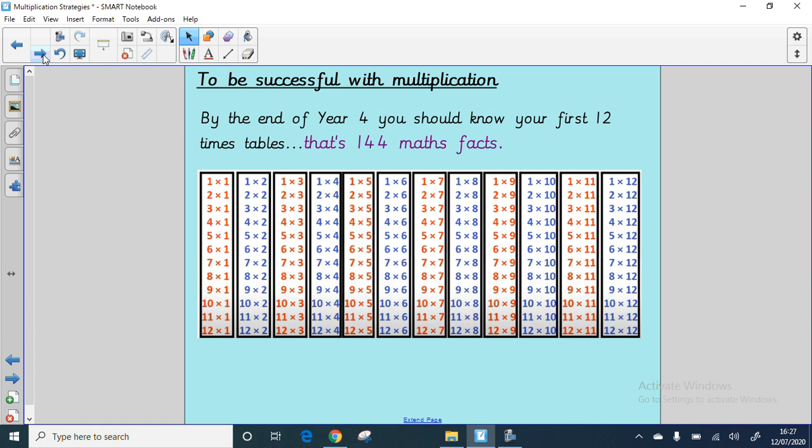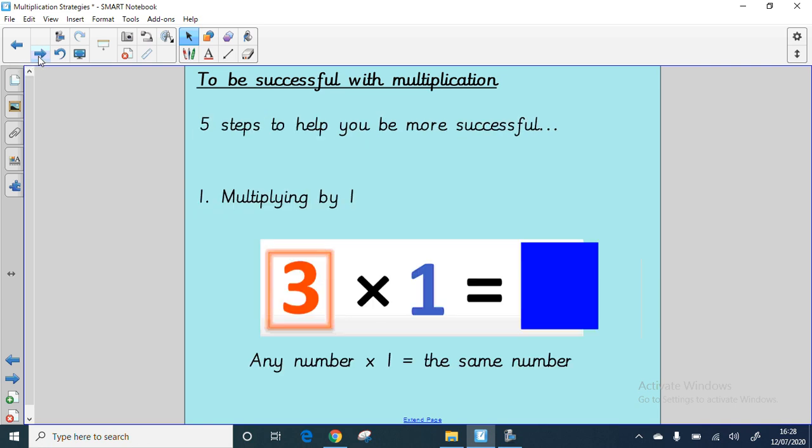By the end of year four, you really should know all of your first twelve times tables, which is 144 maths facts. This is what you really should know by the end of year four. And it's almost the end of year four now. But the good news is you do have the summer holidays if you need that bit extra time to feel more confident with them.